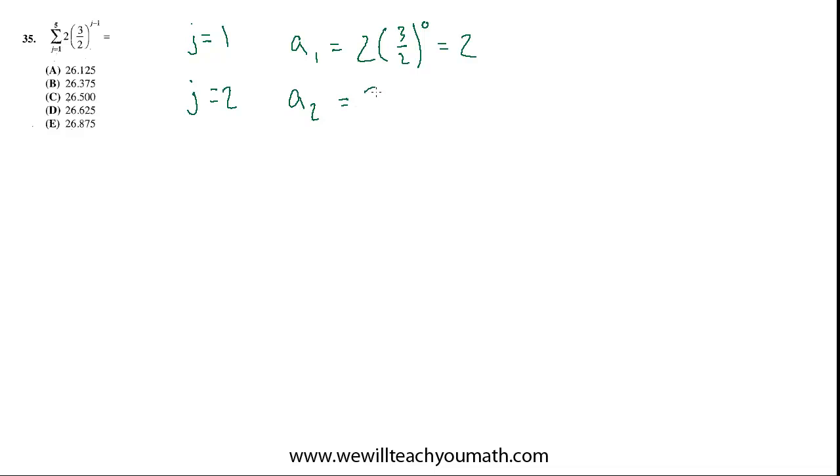j equals two, we're finding a two. So now we're getting two to the three halves. Now it's two minus one is one. So basically the exponent's increasing each time. And then we kind of see the pattern too. So two times three halves is three.